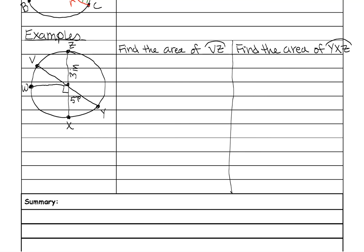This is the exact same example from the 10.1 notes, except this time we're finding area. I'll fill in what we already found from 10.1. Since this angle is 57, that's 57. Since the semicircle is 180, we did 180 minus 90 minus 57 and found that angle is 33. Then we added 57 plus 90 plus 33 plus 57 and found arc YXZ is 237 degrees. Our radius is 3 inches.